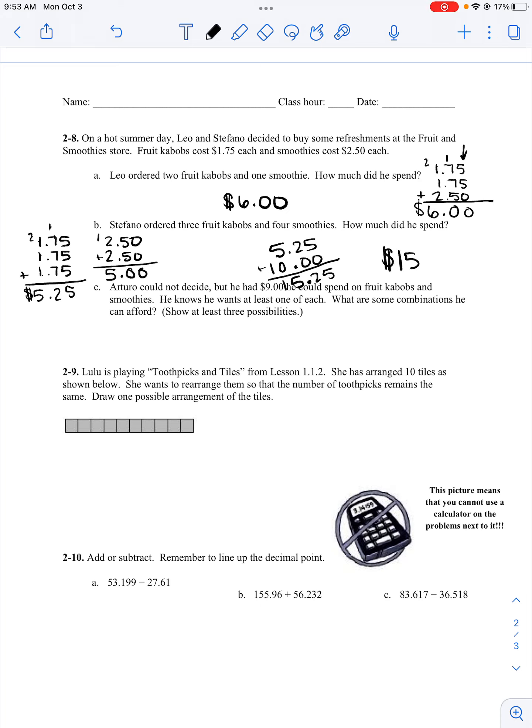Five cents for part C. I'm going to let you work with that because we know that Arturo has $9 that he can spend. He knows that he wants at least one of each. So one combination he could do would be what Leo did and do two fruit kebabs and one smoothie. That's one way. We need to show at least three possibilities. I'm going to let you guys come up with numbers two and three.